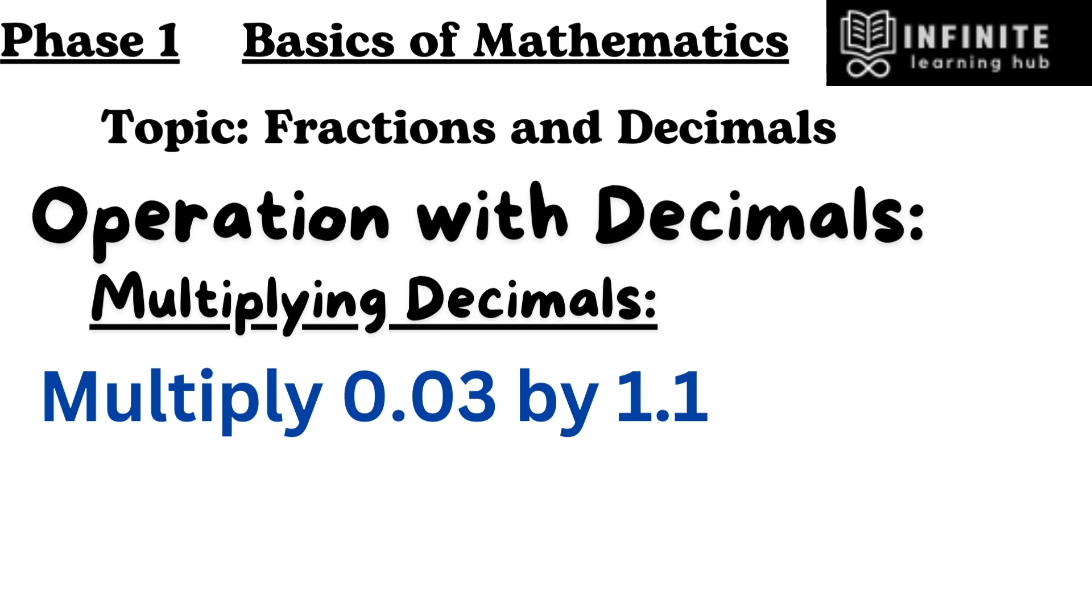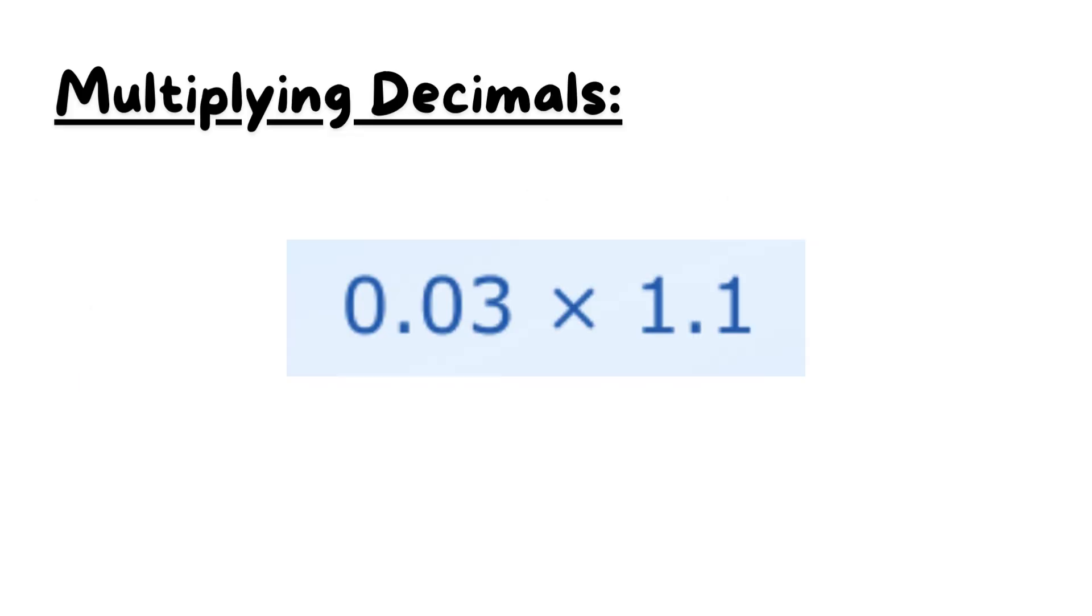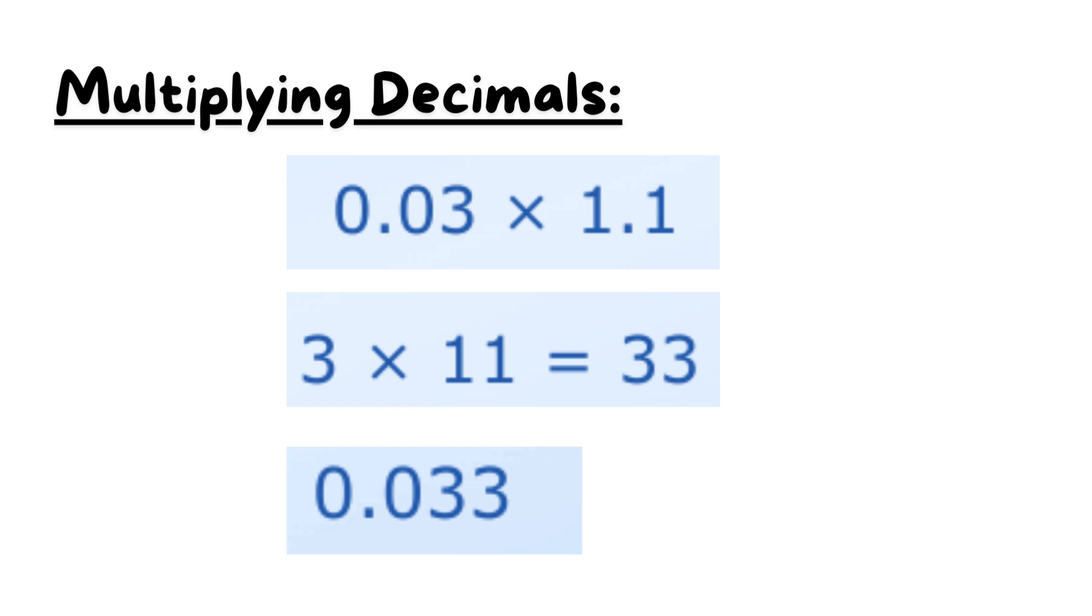Let's solve an example. Multiply 0.03 by 1.1. First start with 0.03 multiply by 1.1. Multiply without decimal points. 0.03 has two decimal places, and 1.1 has one decimal place. So the answer has three decimal places.